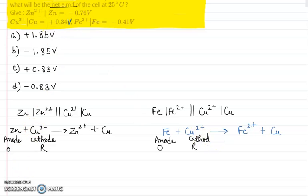Now, we have to calculate the EMF of these cells. We have EMF equals reduction potential of cathode minus reduction potential of anode.